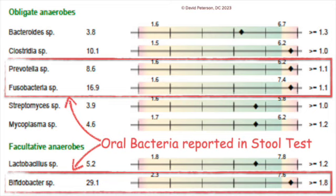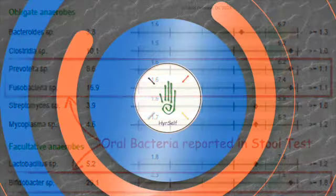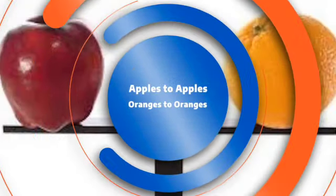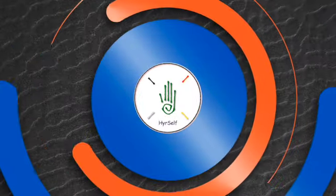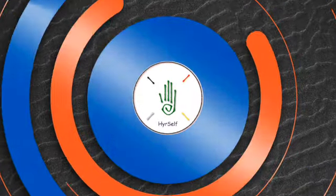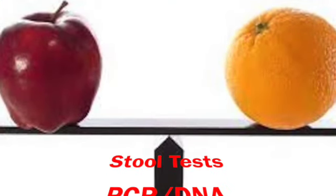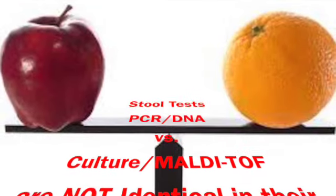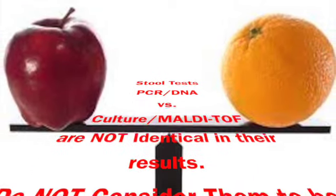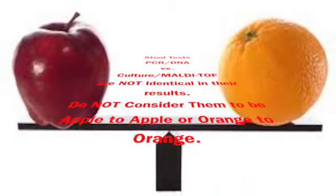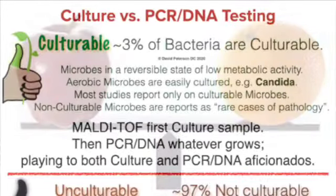It was at this point that I decided I would go through every marker for every test I was using in my practice. The first thing to understand about stool tests when comparing PCR DNA to culture or multi-TAV tests is they are not apples to apples, oranges to oranges — they are completely different tests.